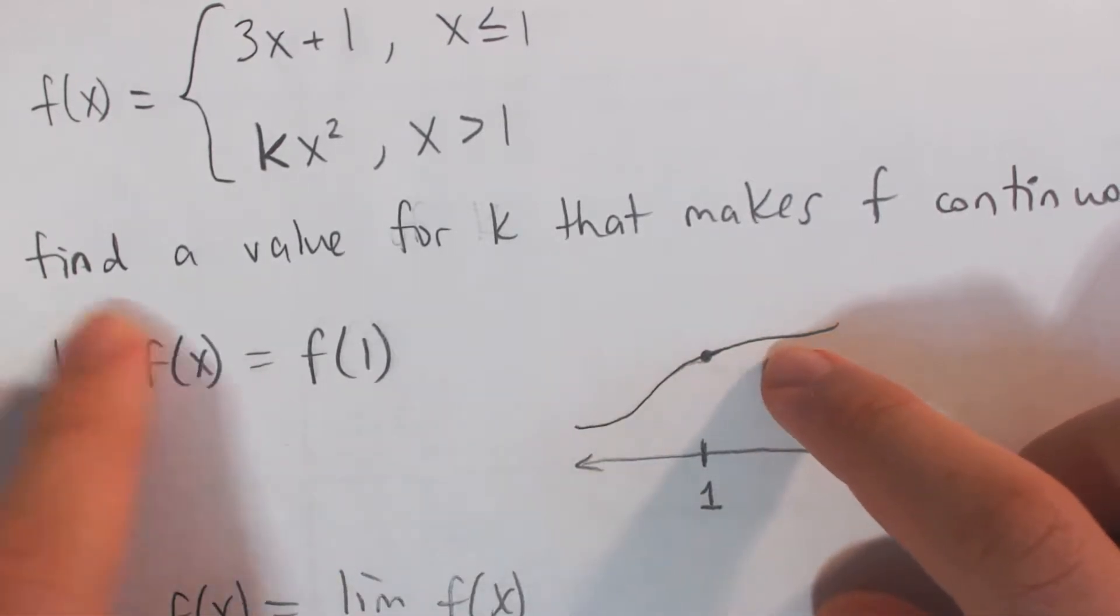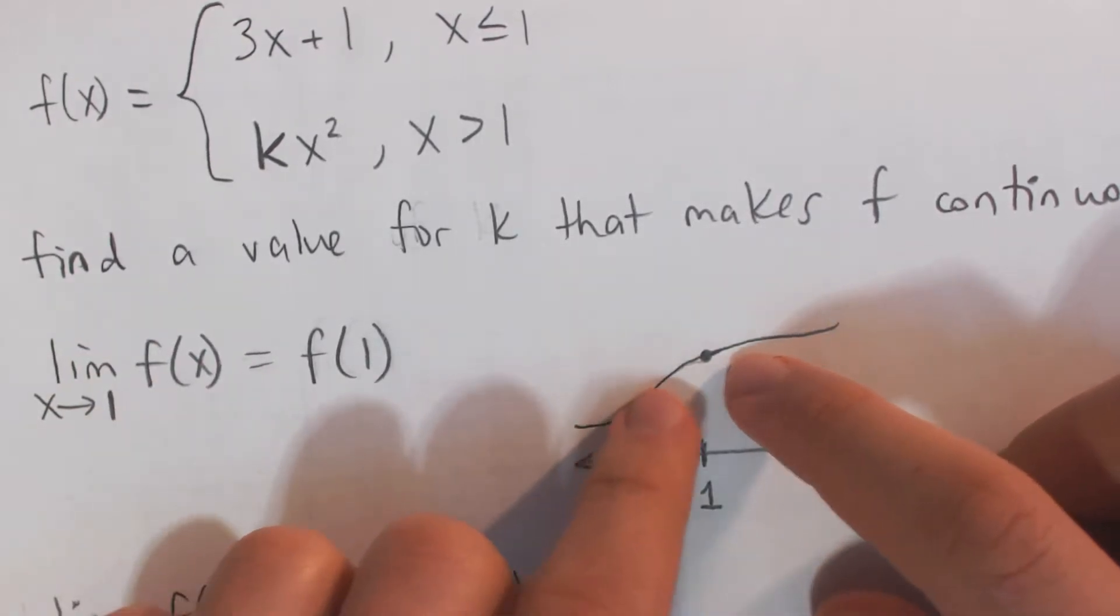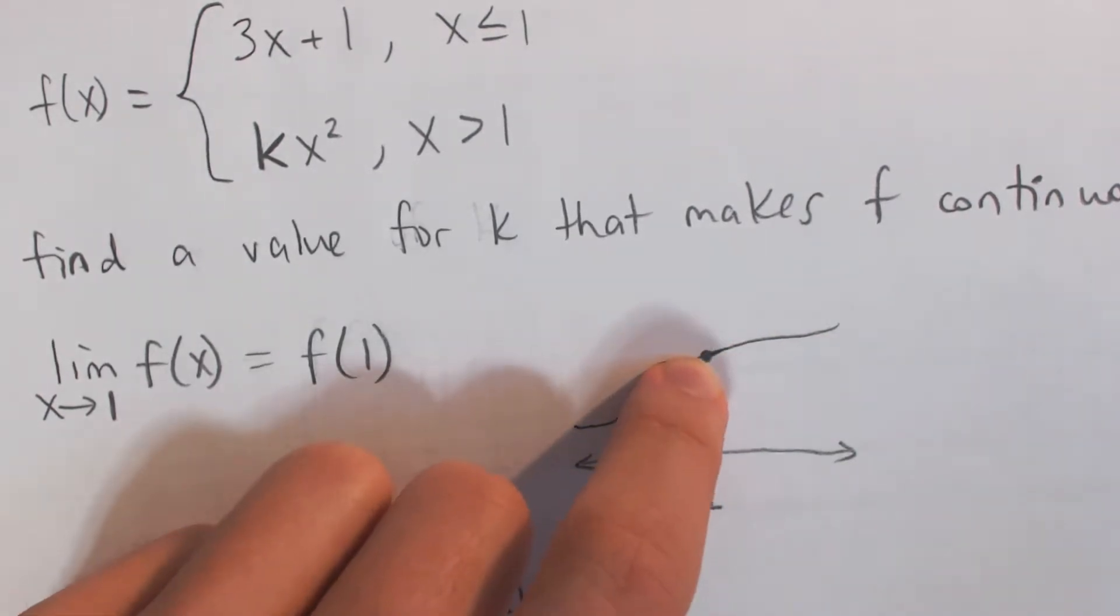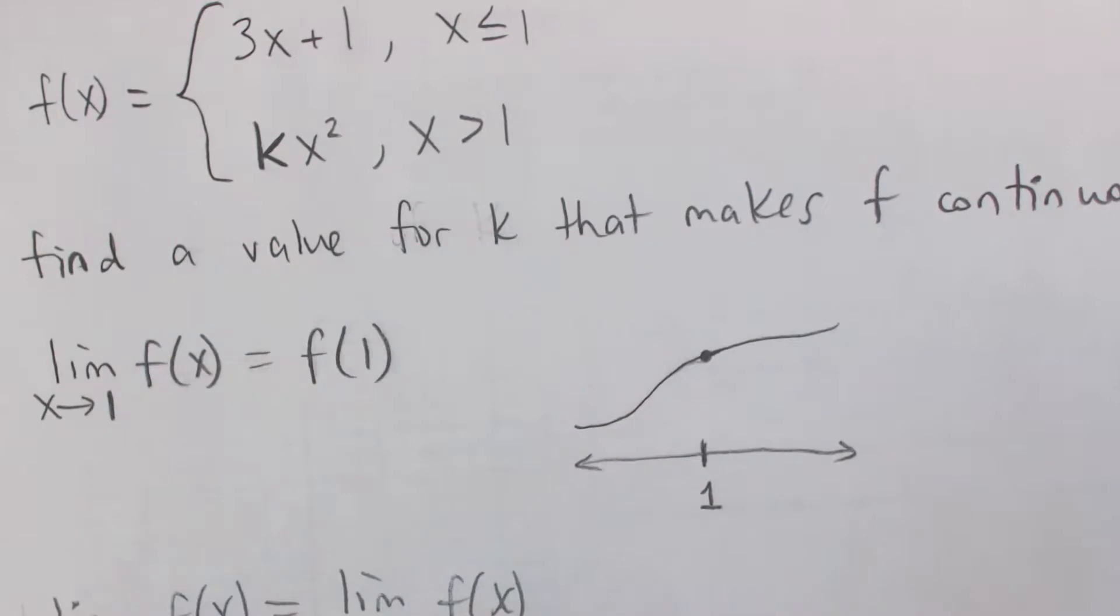For this limit to exist, limits from each side have to be equal, and it also has to be equal to the actual value at that function, like it has to be colored in. It can't be some other value, otherwise that would not be continuous.